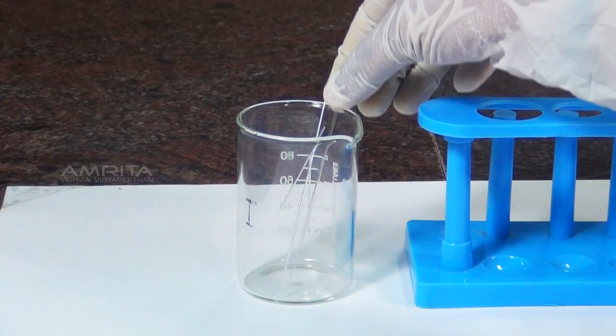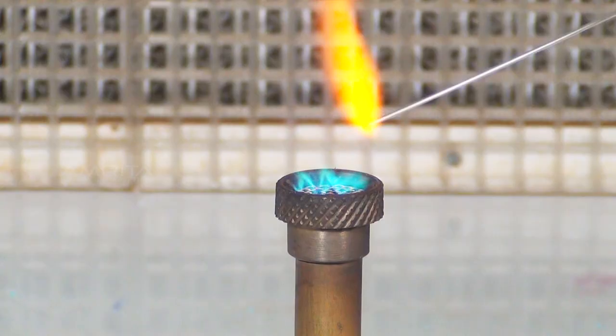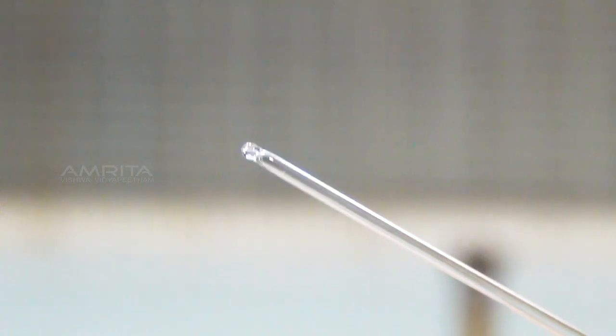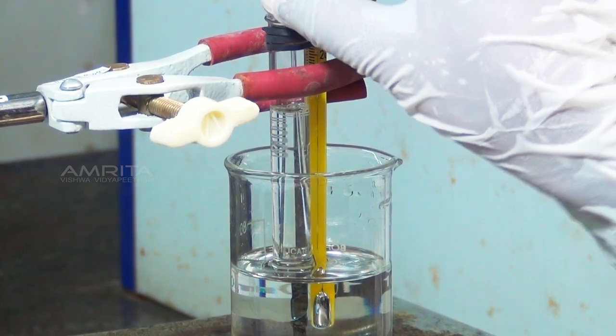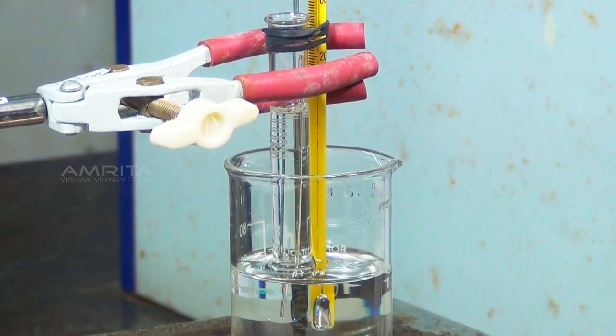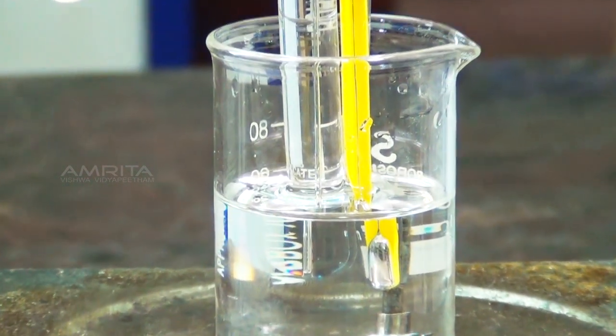Take a capillary tube and seal one end by heating it in the flame of the Bunsen burner. Place the capillary tube in the test tube containing toluene so that its open end is dipped in toluene.